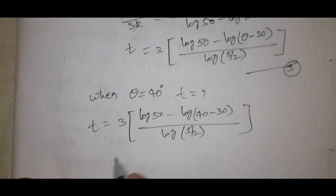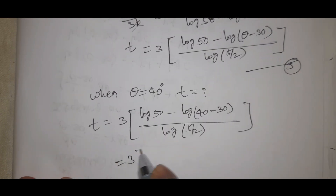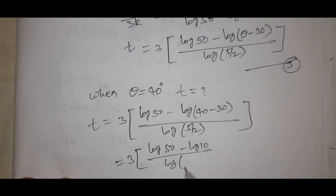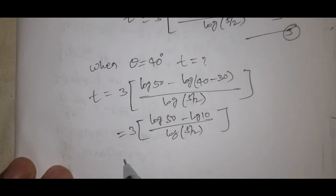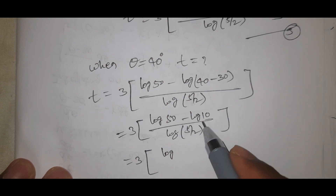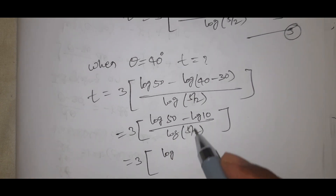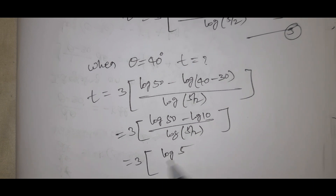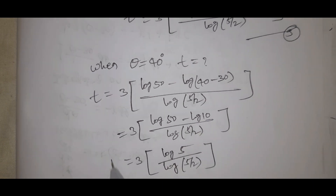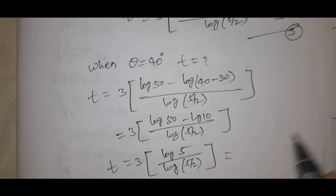T equal to 3 into log 50 minus log of 40 minus 30, divided by log 5 by 2. That equals 3 into log 50 minus log 10, divided by log 5 by 2. Simplifying: 3 into log of 50 by 10, divided by log 5 by 2, equals 3 into log 5 divided by log 5 by 2. Now we find the T value.